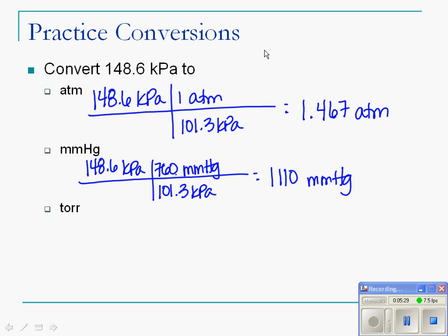And remember, millimeters of mercury and torr are the exact same thing, so then we also have 1,110 torr. And that's about it.